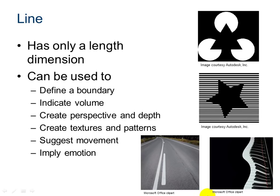Line is another element that we need to consider in design. It has only a length. It can be used to define a boundary, as in this example, indicate volume, create perspective or depth, as seen in the lines here with the road — how the line is longer closer to you, and they get shorter farther away, so it makes the picture appear to be fading in the distance, even though it's a 2D picture.